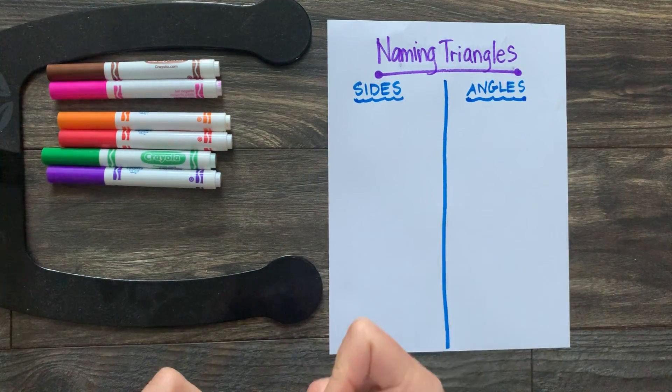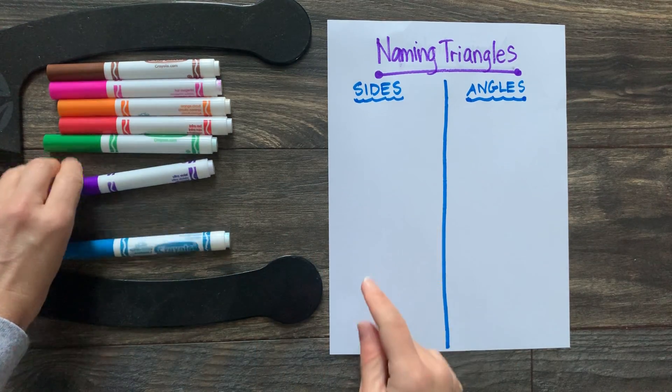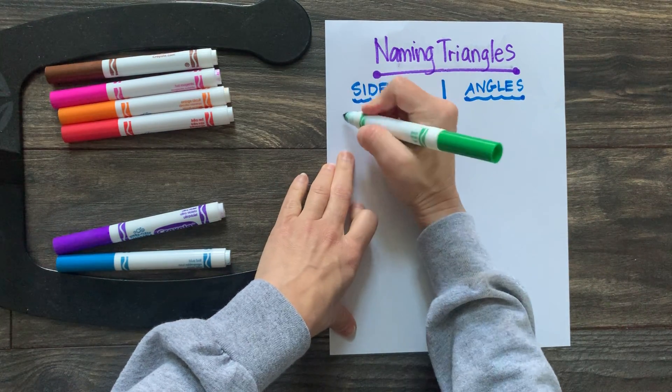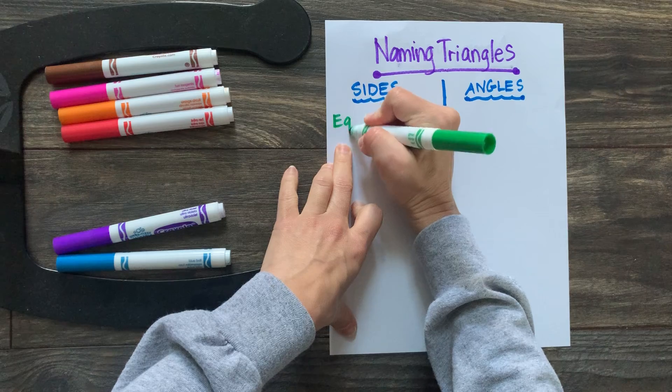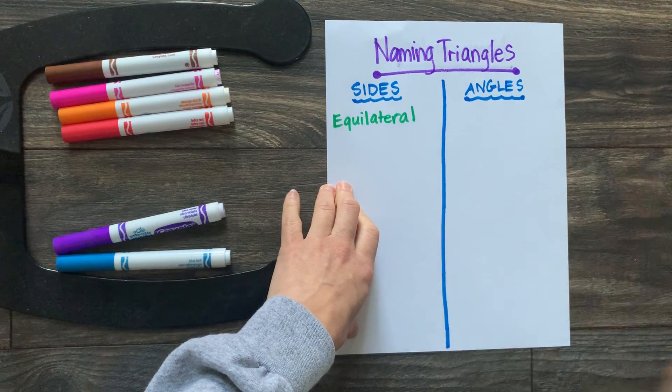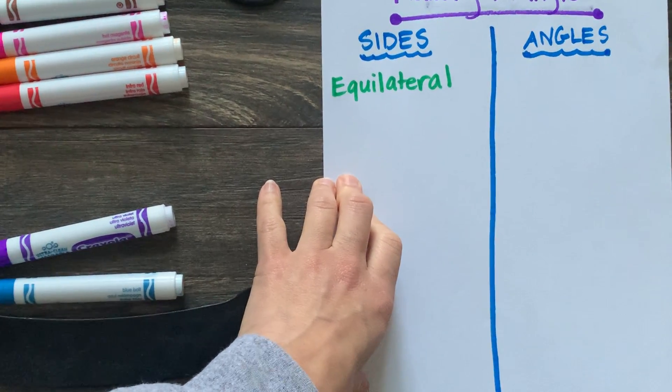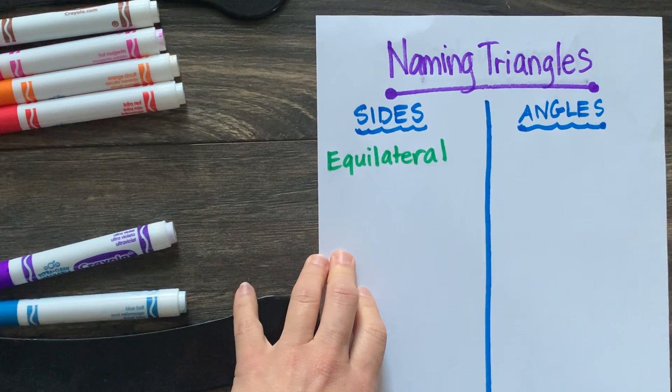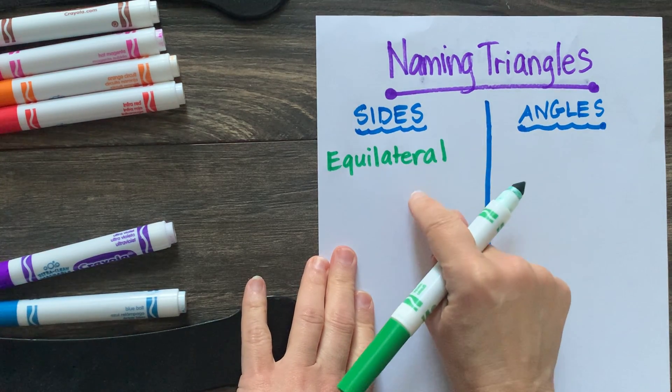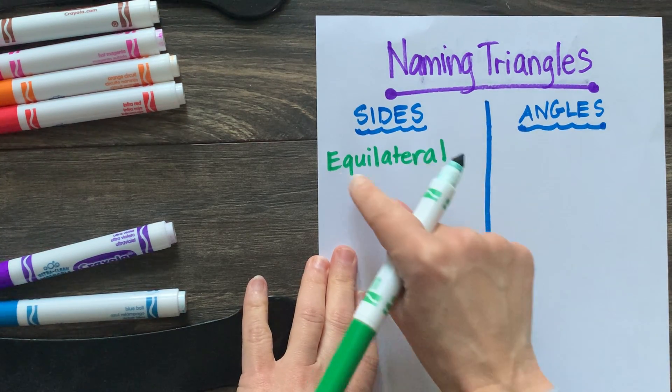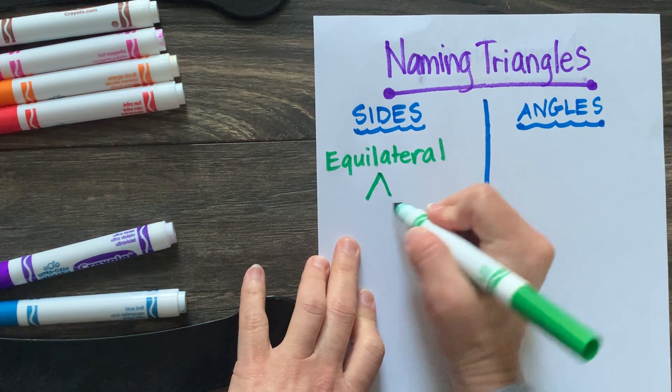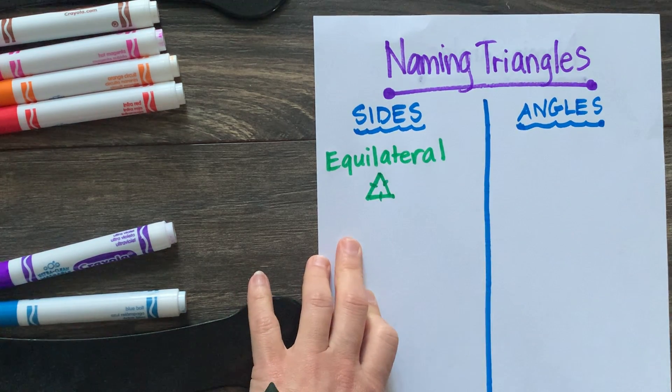Let's talk about sides first. So there are three different ways that we can name an angle by its side. The first way is what we call equilateral. So on an equilateral triangle, look at the word itself. An equilateral has equal, and remember what we said in a previous video that lateral means side or line. So equilateral means equal lines or equal sides.